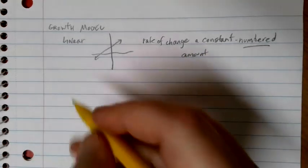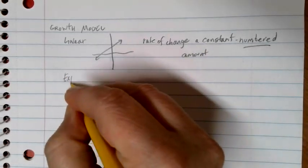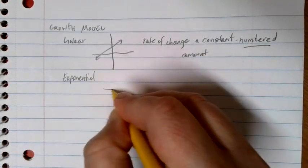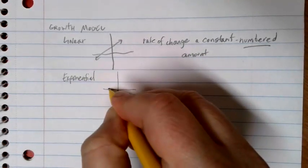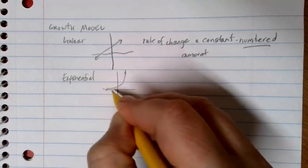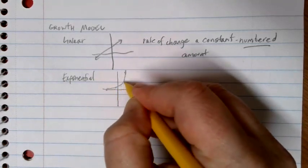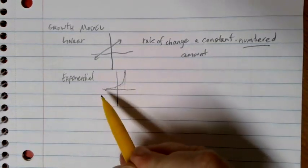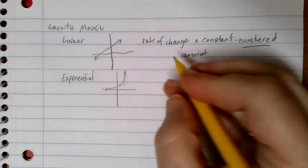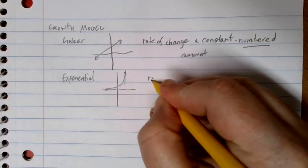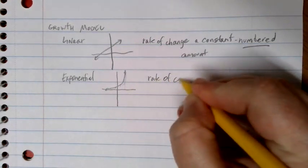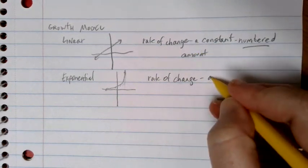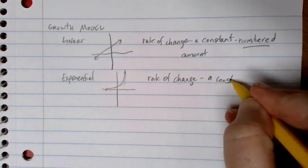Another type of growth model is an exponential growth model. For an exponential growth model, you can see right away that we're not growing by a constant amount. We start by growing really small, and then as time goes on, we grow more and more. However, it's doing this in a very predictable way. For exponential functions, the defining characteristic is that our rate of change is a constant percentage growth.